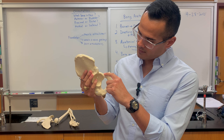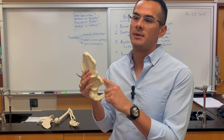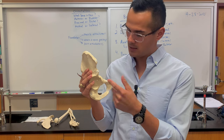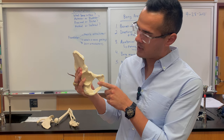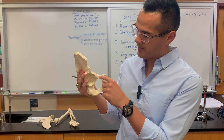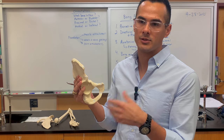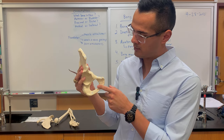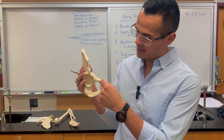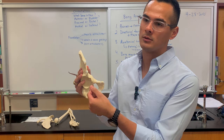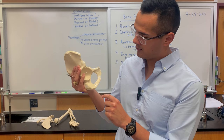Moving past the ilium to the pubic region: this arm-like bar of bone is called a ramus. You have this ramus and the other ramus — this one is the superior pubic ramus and the other is the inferior pubic ramus. This pointed projection is the pubic tubercle, not the pubic tuberosity, and this is the pubic ramus.